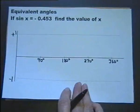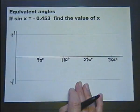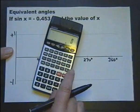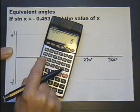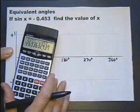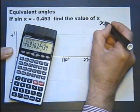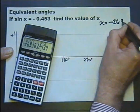Let's do one more sine question. If sine of x is minus 0.453, what's the value of x? Let's do inverse sine negative 0.453, and that gives us an answer of x equals minus 26.9 degrees.